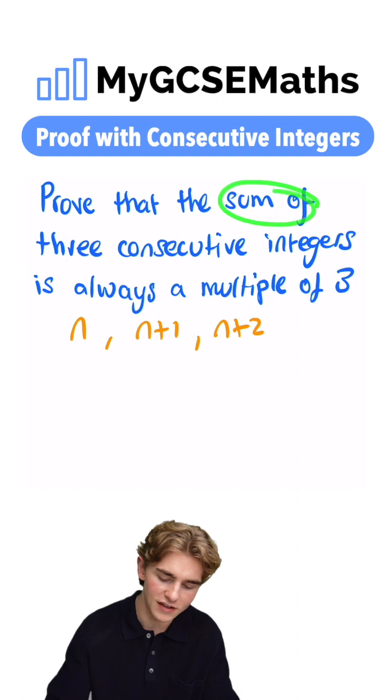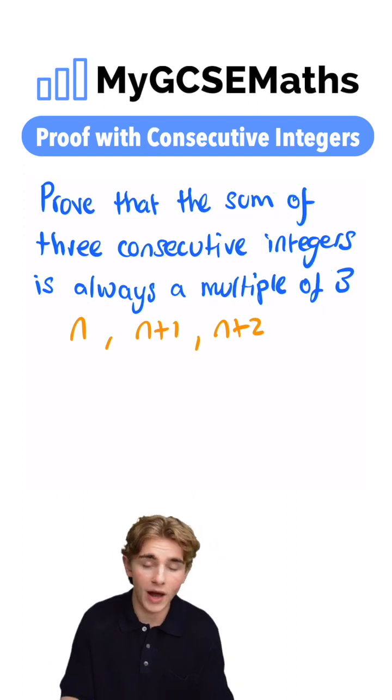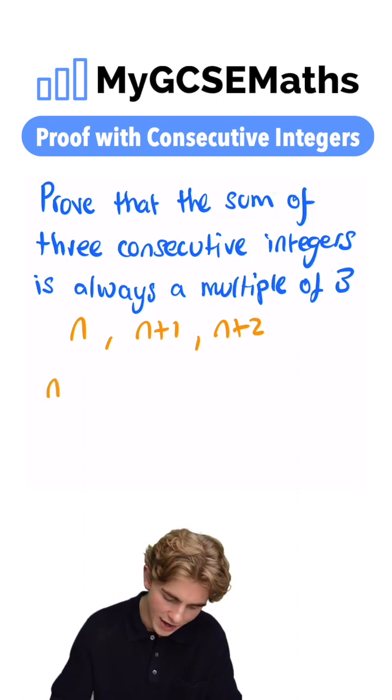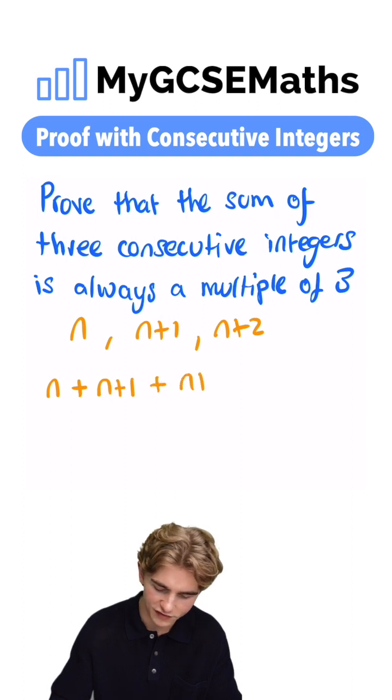Now, to show that the sum of these is a multiple of three, what can we do? Well, we're going to add them all together. So we're going to do n plus n plus one plus n plus two.